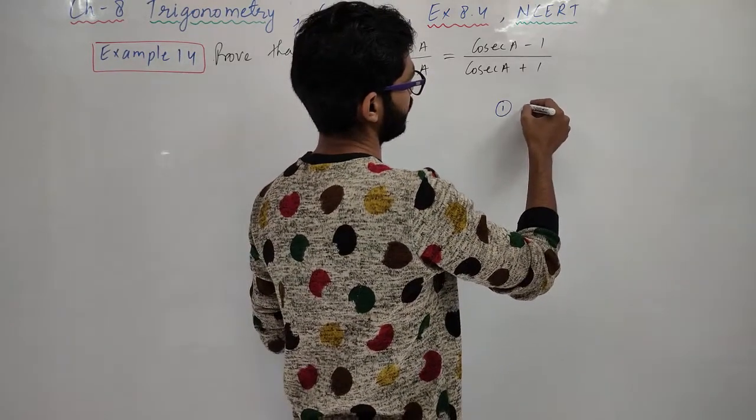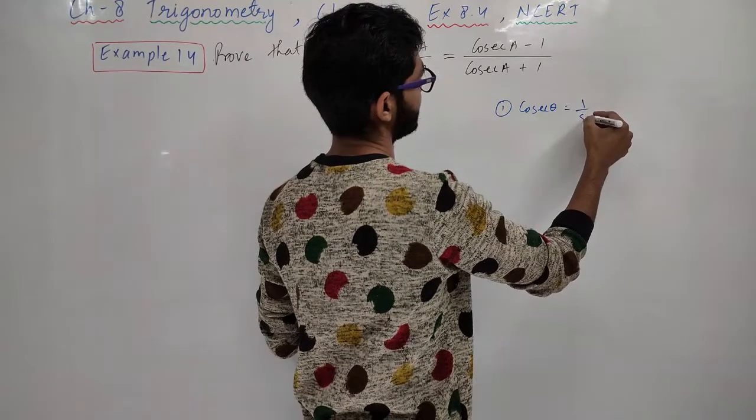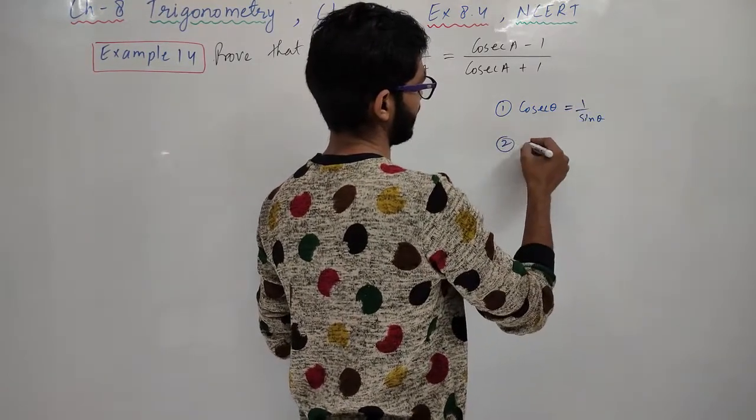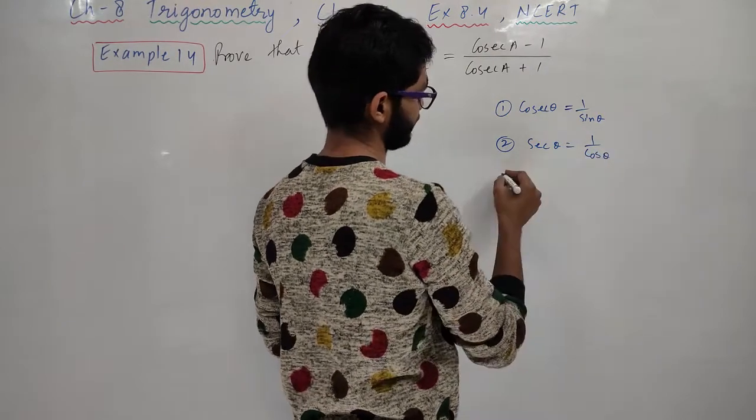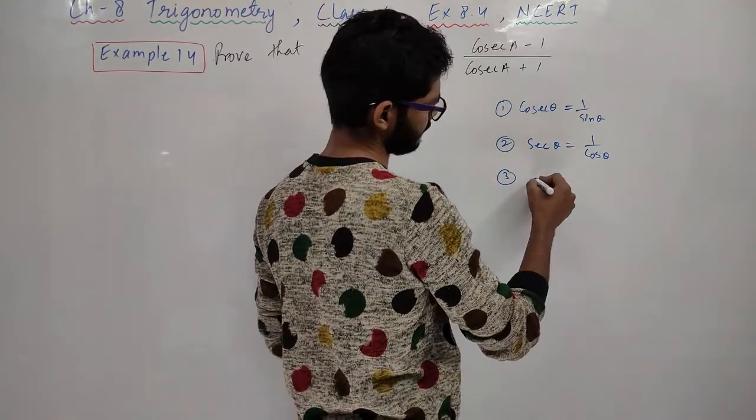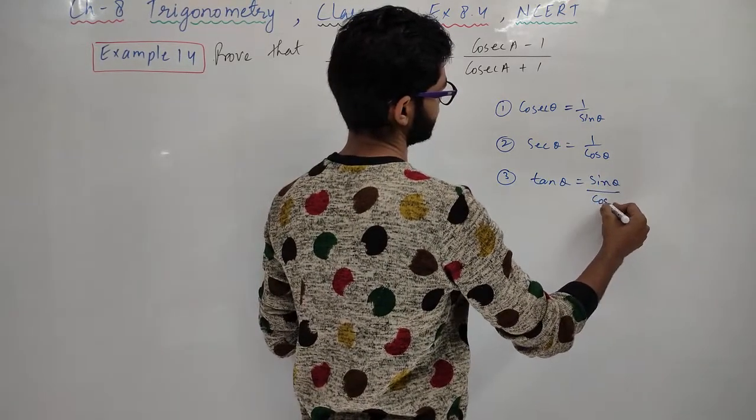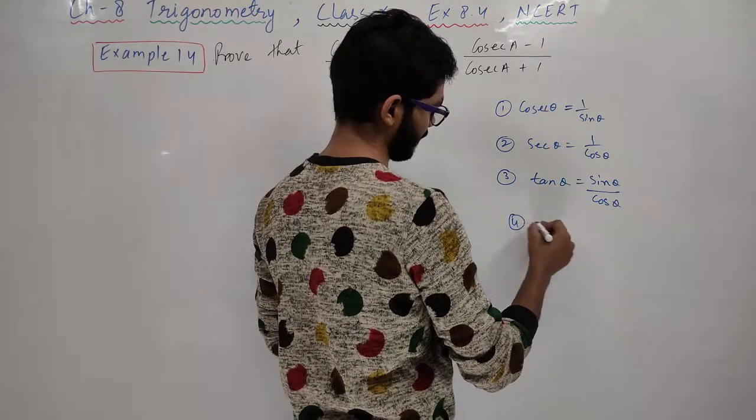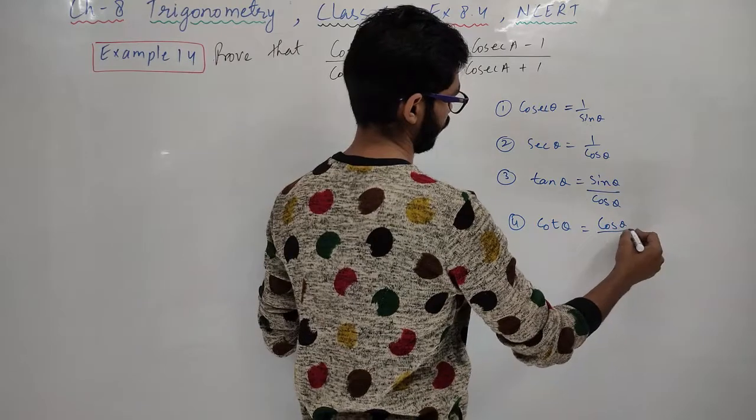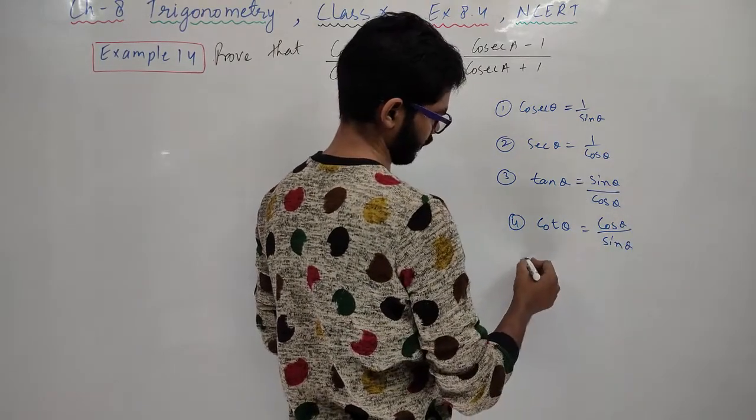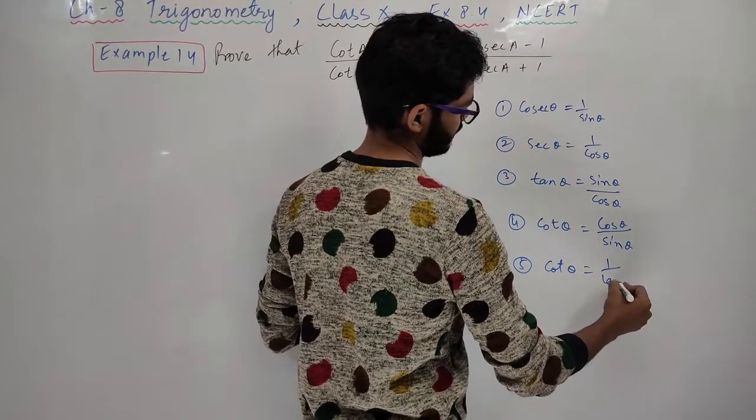First, cosec theta equals to 1 over sin theta. Second, sec theta equals to 1 over cos theta. Third, tan theta which is sin theta over cos theta. Cot theta formula is cos theta over sin theta. And another formula is cot theta equals 1 over tan theta.